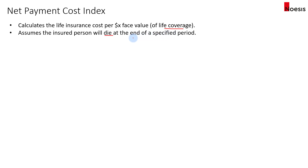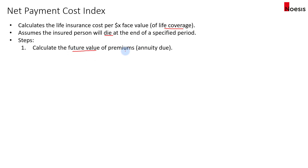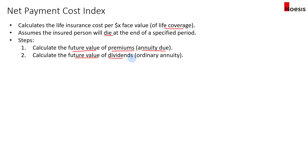To calculate the net payment cost index, we will take the following steps. First, we calculate the future value of the premiums, usually based on an annuity due, meaning the first cash flow happens today. Second, we calculate the future value of the dividends, which is based on an ordinary annuity, meaning the first dividend occurs at the end of the year.